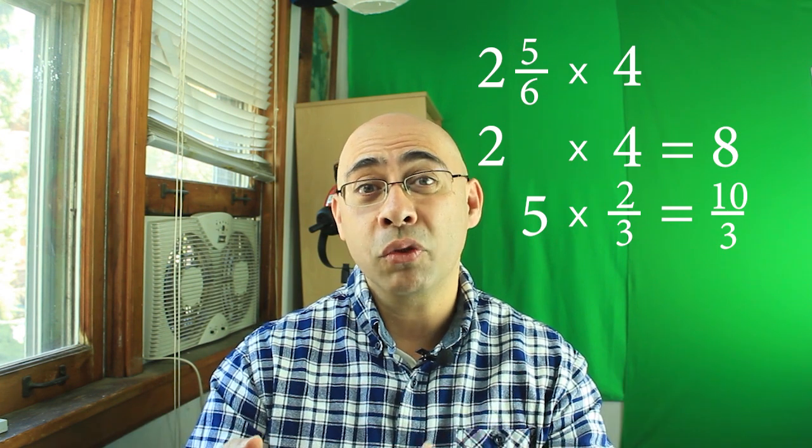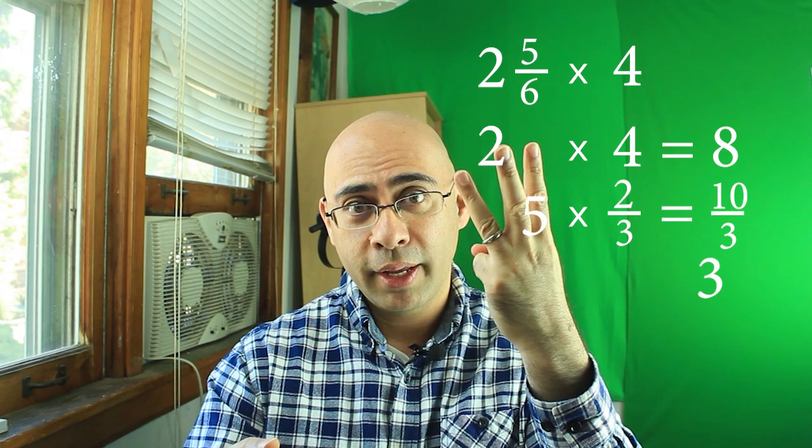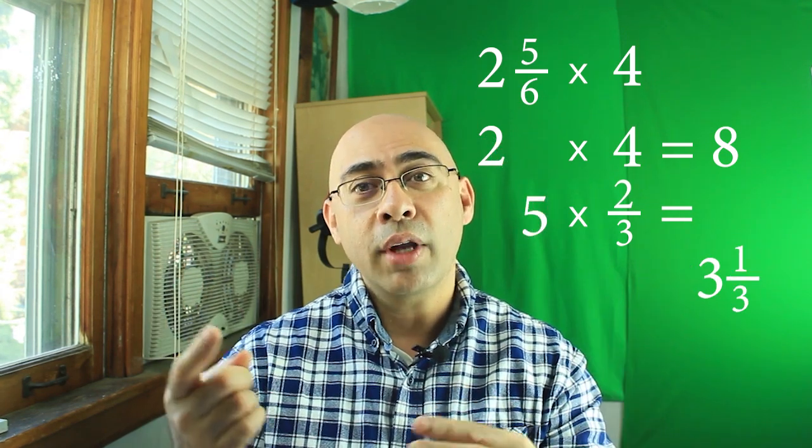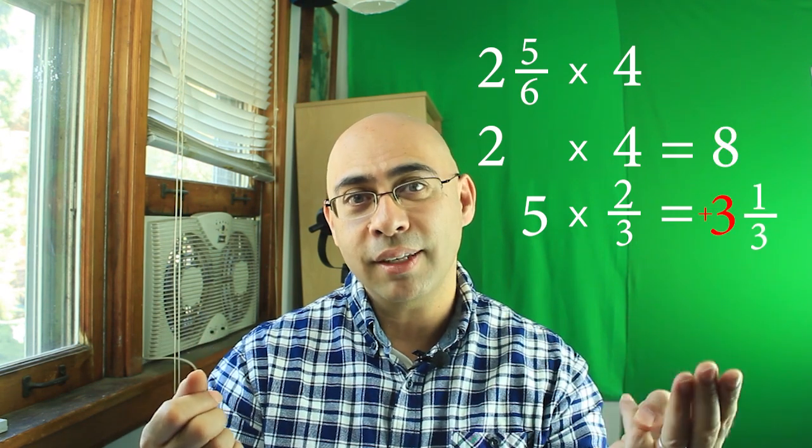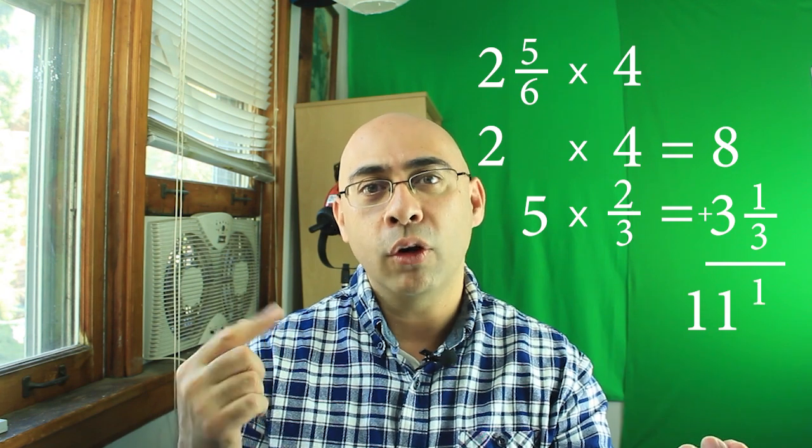And now you just got to think to yourself how many threes go into ten. Well three, six, nine. So three of them. And you'll have one left over because ten minus one is nine. So now with the eight that we have set aside we do eight plus three is eleven. The answer is eleven and one over three.